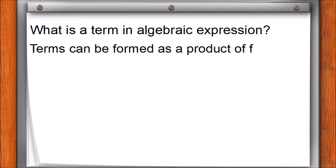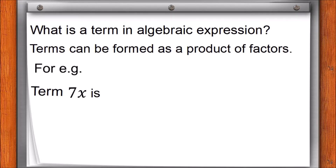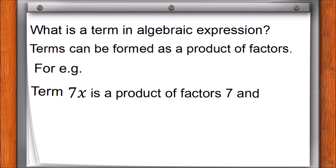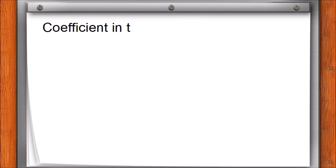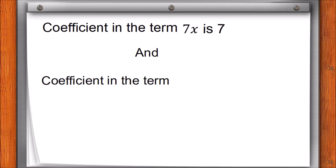Terms can be formed as a product of factors. For example, the term 7x is a product of factors 7 and x. The term 4xy is a product of factors 4, x, and y. The coefficient in the term 7x is 7, and the coefficient in the term 4xy is 4.